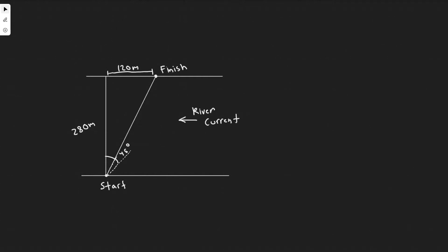In this problem, a boat whose speed in still water is 2.7 meters per second must cross a 280-meter wide river and arrive at a point 120 meters upstream from where it starts. To do so, the pilot must head the boat at a 45-degree upstream angle. What is the speed of the river's current?